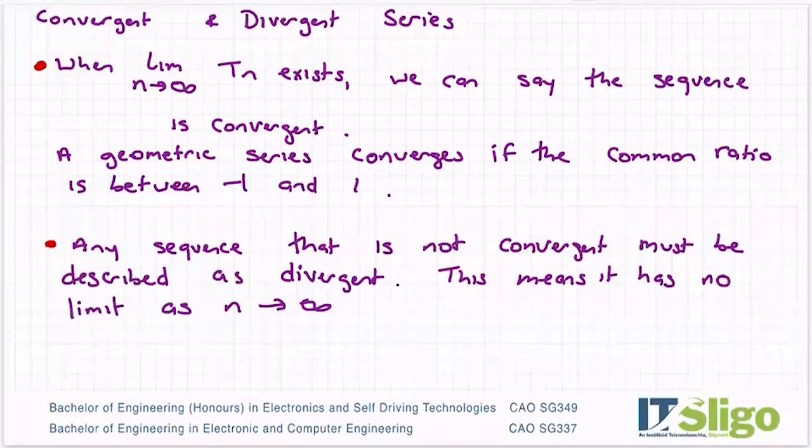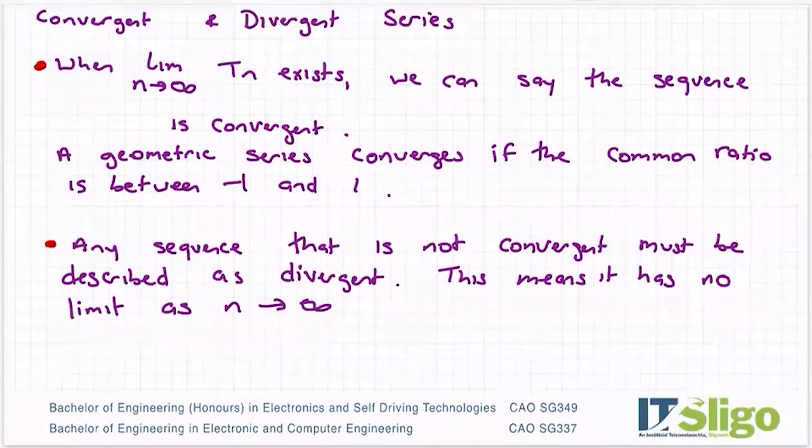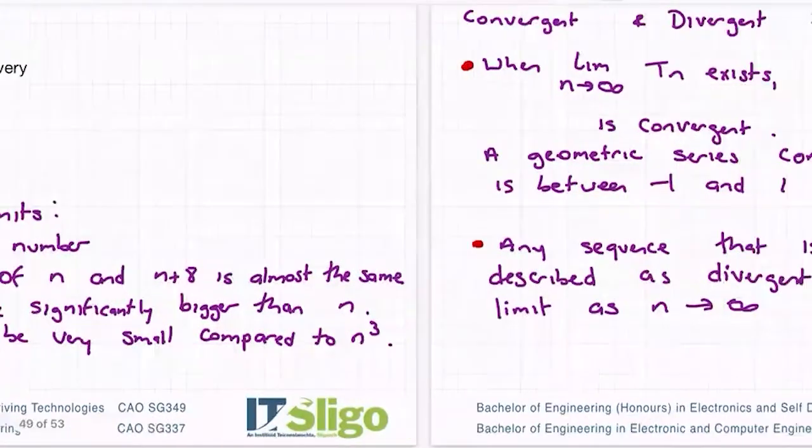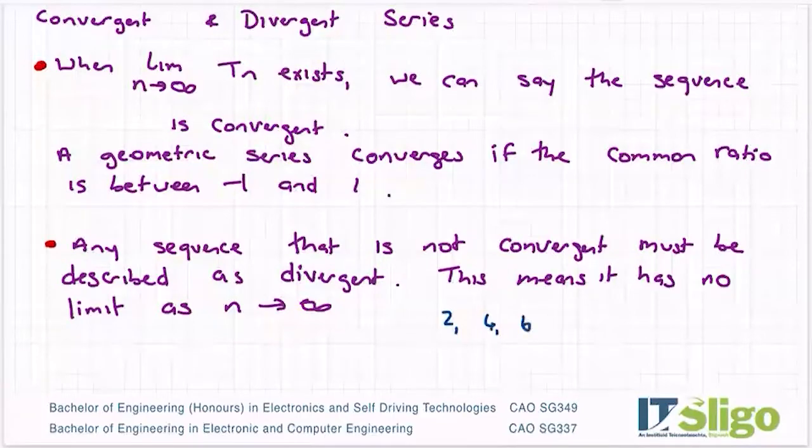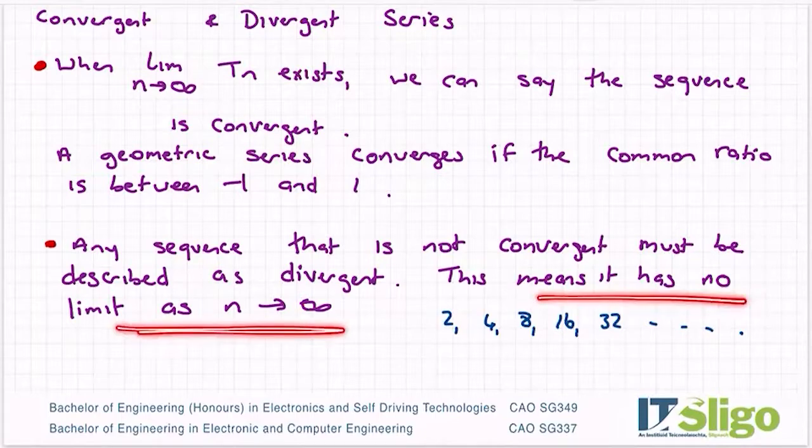Any sequence that's not convergent must be described as divergent. This means it has no limit as n approaches infinity. So if we think about that for a second, and we think about the two examples that we did, the 2, the 4, the 8, the 16, the 32, and so on, so forth. Does that sequence converge at all or is it divergent? So this one would be divergent. It has no limit as n approaches infinity.